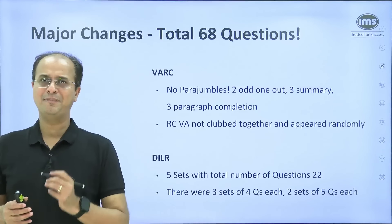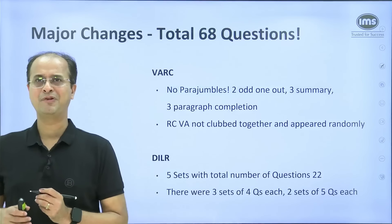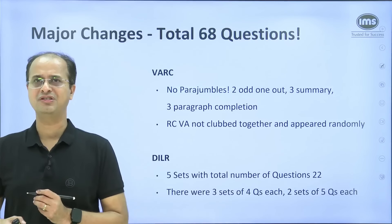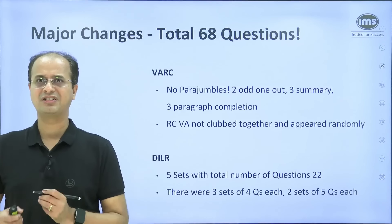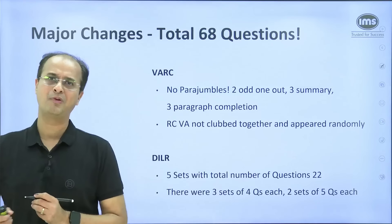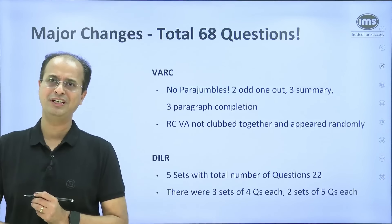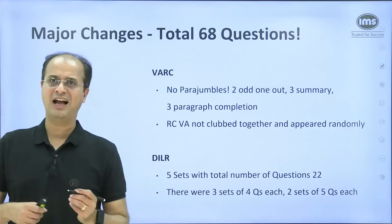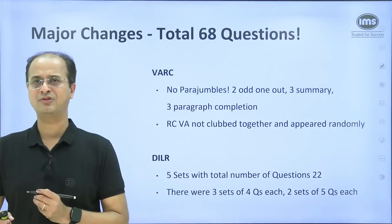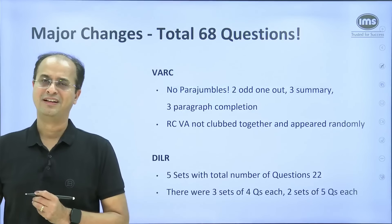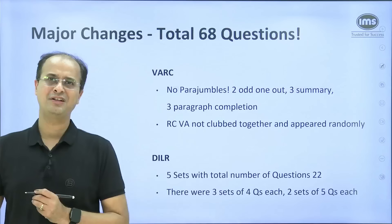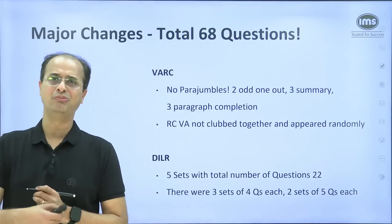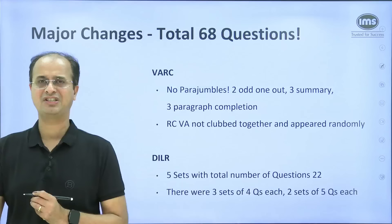The second surprise was in DILR — this time there was an increase in the number of questions. There were 5 sets this time and the total number of questions was 22: 3 sets had 4 questions each and there were 2 sets of 5 questions each. Another surprise was that DILR was much easier compared to last year.